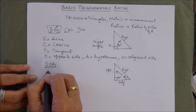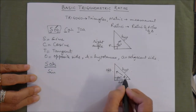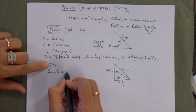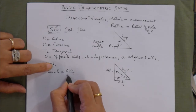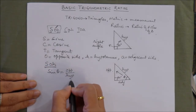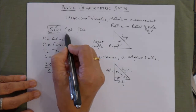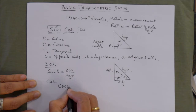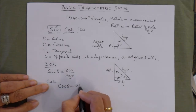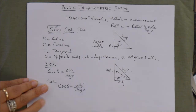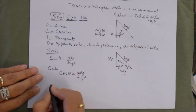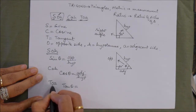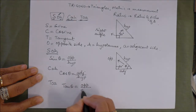Using SOH-CAH-TOA, we write: sine theta equals opposite over hypotenuse. Then CAH: cosine theta equals adjacent over hypotenuse. Then TOA: tangent theta equals opposite over adjacent.